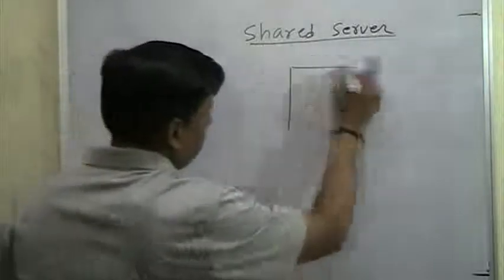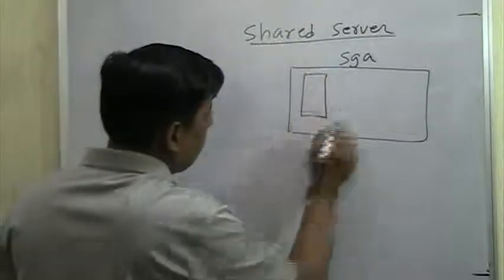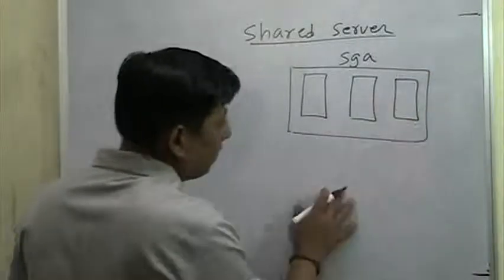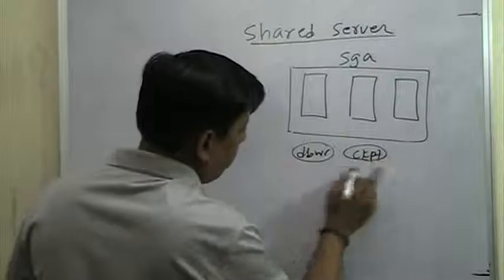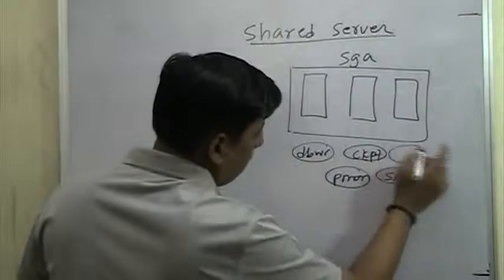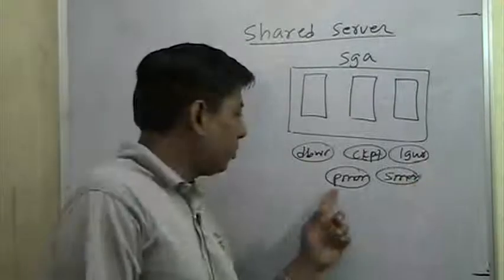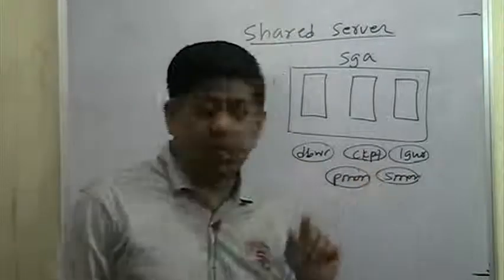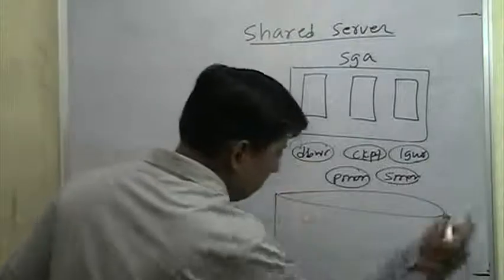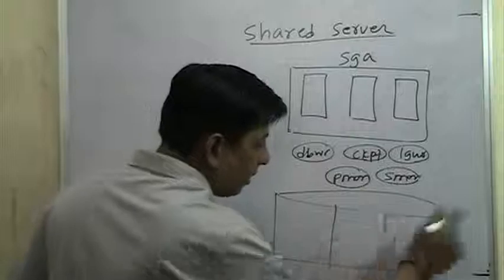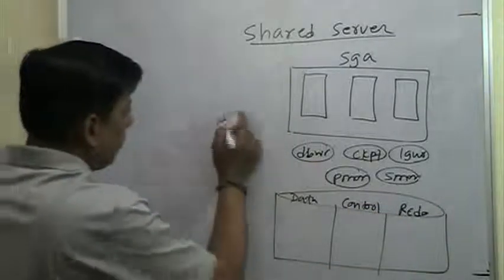This is the SGA - System Global Area. Inside the SGA we have a buffer cache, a shared pool, and a redo log buffer - these are the three mandatory things. Then we have processes: DBWR, CKPT, PMON, SMON, and LGWR. We have talked a lot about DBWR, LGWR, and PMON. We haven't gone into too much detail about CKPT and SMON - we will do that when we discuss backup and recovery. On the hard disk we have data files, control files, and redo files.